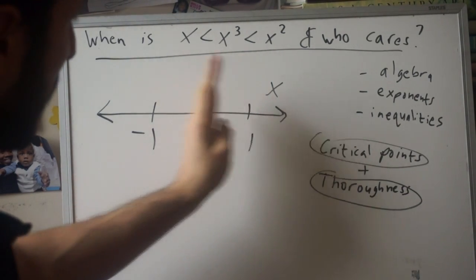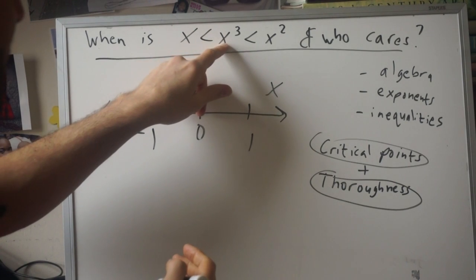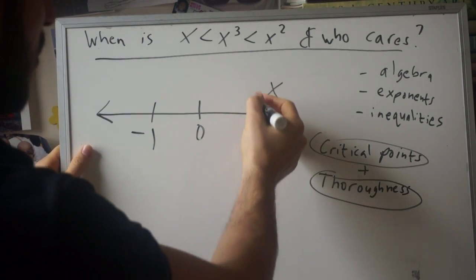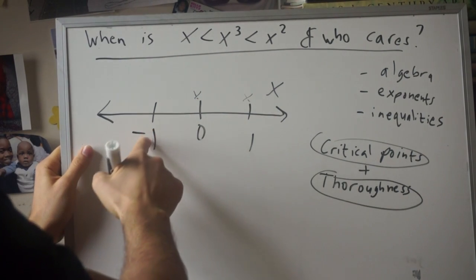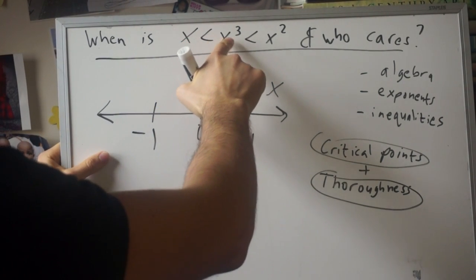Now we have to also try the actual critical points. So if we plug in one, one is not less than one cubed, so one doesn't work as well. Zero we said doesn't work. Negative one—is negative one less than negative one cubed, which is also negative one? So this is not true either.